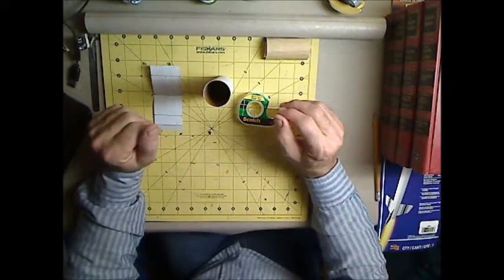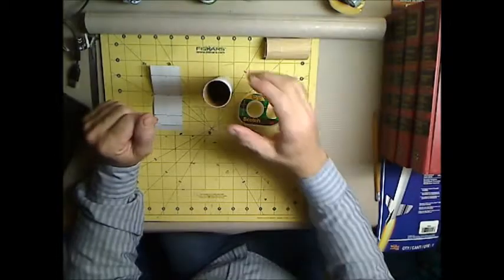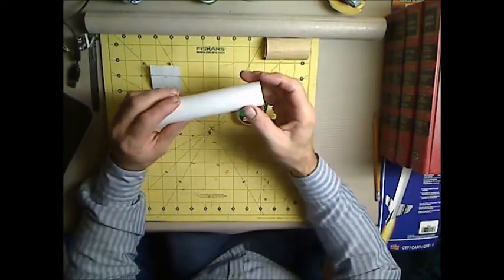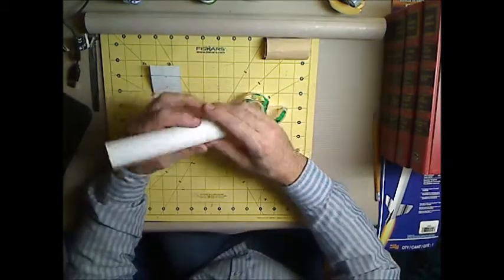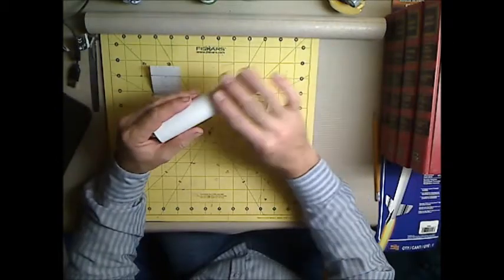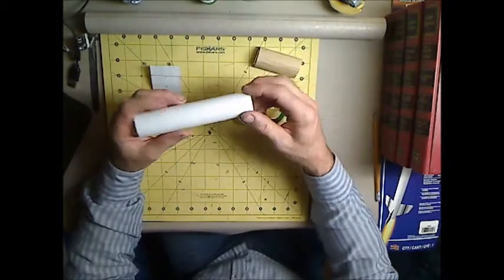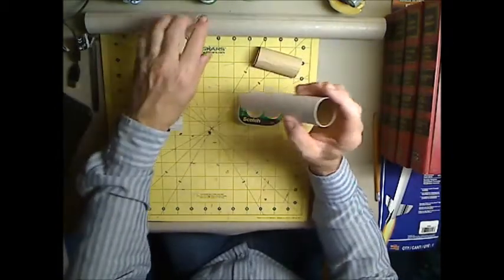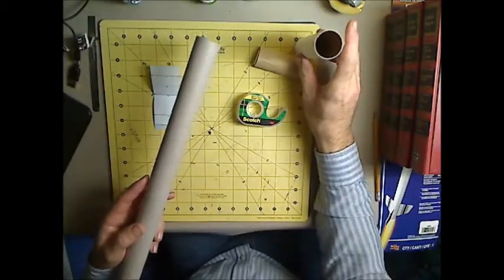Alright, we've moved on to our next step which is going to be marking our body tube and fin tube for the fins and the launch lugs. Again, we took sandpaper and we knocked the shine off so that we get better adhesion from the glue on both tubes.